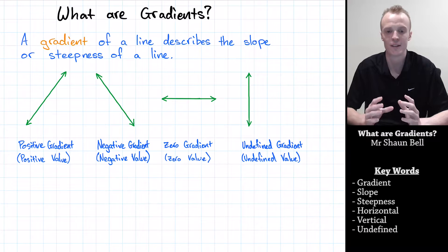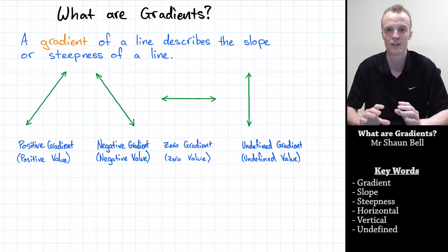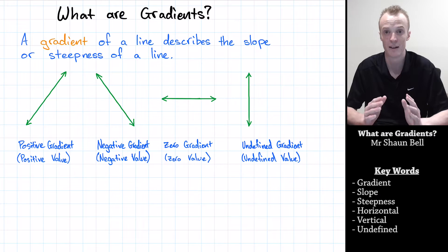Let's quickly recap those scenarios. If we're reading it from left to right and it's going uphill, we call that a positive gradient and give it a positive value. However, if we read it from left to right and it's going downhill, we call that a negative gradient and give it a negative value.